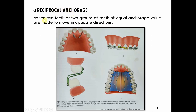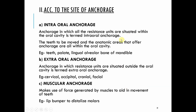Reciprocal anchorage is when two teeth or two groups of teeth of equal anchorage value are made to move in opposite directions. For example, a finger spring moves the left and right lateral incisors toward each other to close a diastema. Elastics can also be used to close a midline diastema or correct a single-tooth posterior crossbite. The coffin spring incorporated into a base plate can push both arches outward in cases of constricted arches.